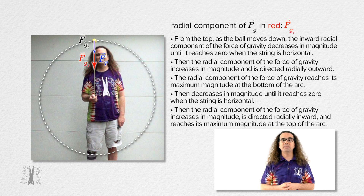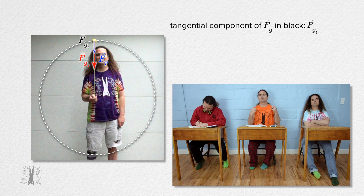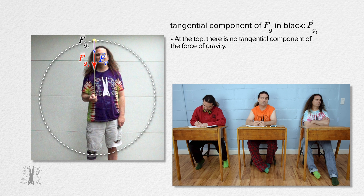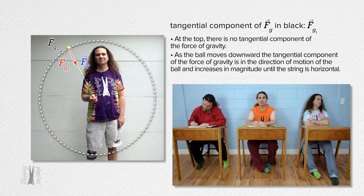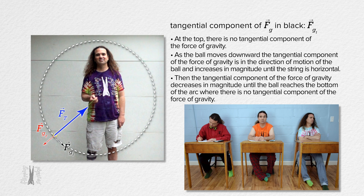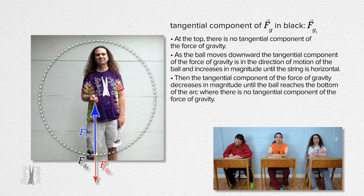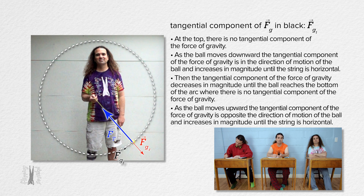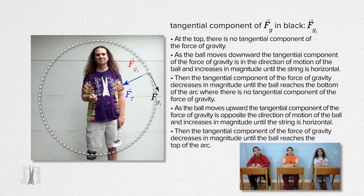Very nice, Billy. Bobby, please do the same thing with the tangential component of the force of gravity. At the top there is no tangential component, and as the ball moves downward, the tangential component is in the direction of motion and increases in magnitude until the string is horizontal. Then it decreases in magnitude until the ball reaches the bottom of the arc, where there is no tangential component. As the ball moves upward, the tangential component is opposite the direction of motion and increases in magnitude until the string is horizontal, then decreases until the ball reaches the top of the arc.